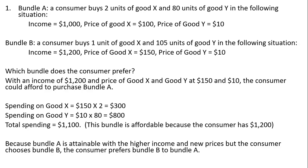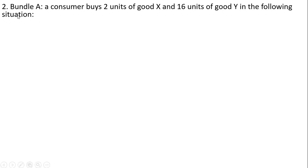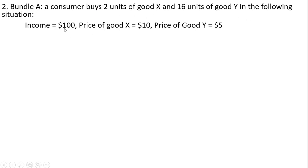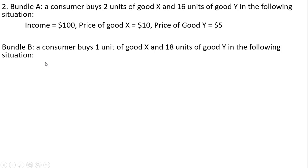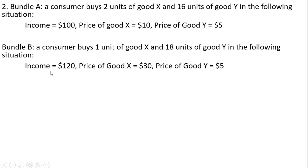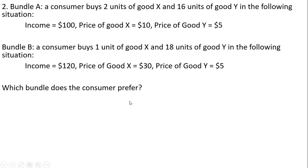Alright, let's do another example. In the first situation, the consumer buys bundle A, which consists of two units of good X and 16 units of good Y, when the consumer has an income of $100, the price of good X at $10 apiece, and the price of good Y at $5 apiece. In the second situation, the consumer buys bundle B, which consists of one unit of good X and 18 units of good Y, when the consumer has $120 of income, the price of good X is $30, and the price of good Y is still $5. Which bundle does the consumer prefer?